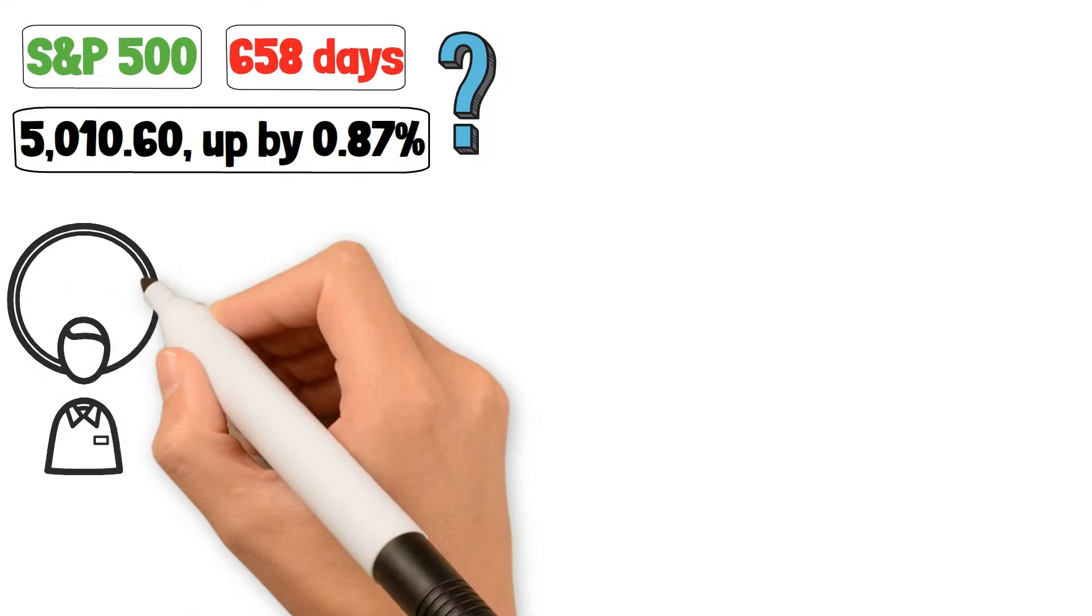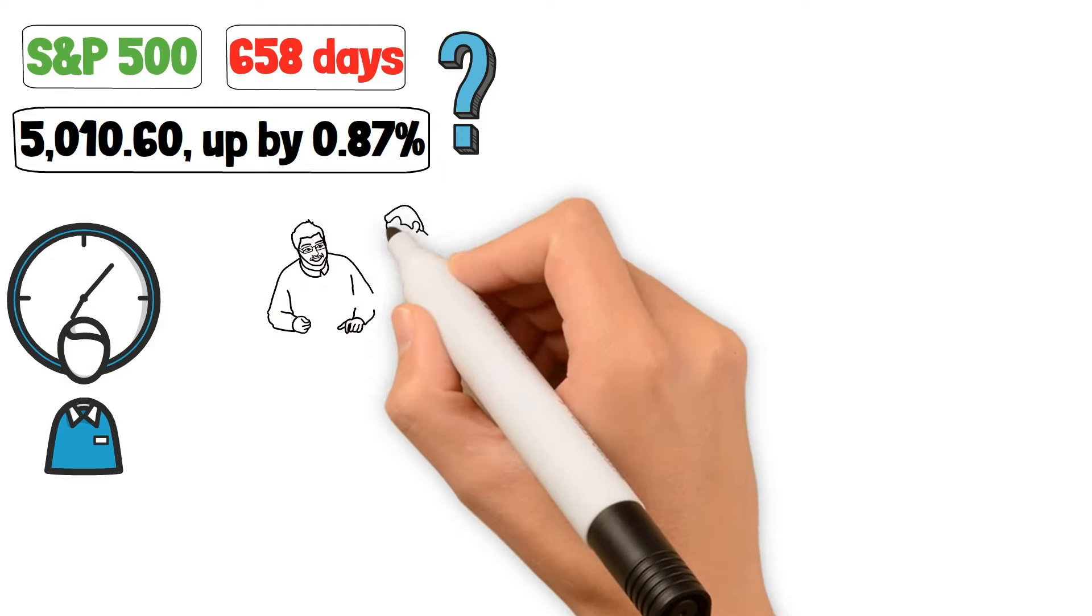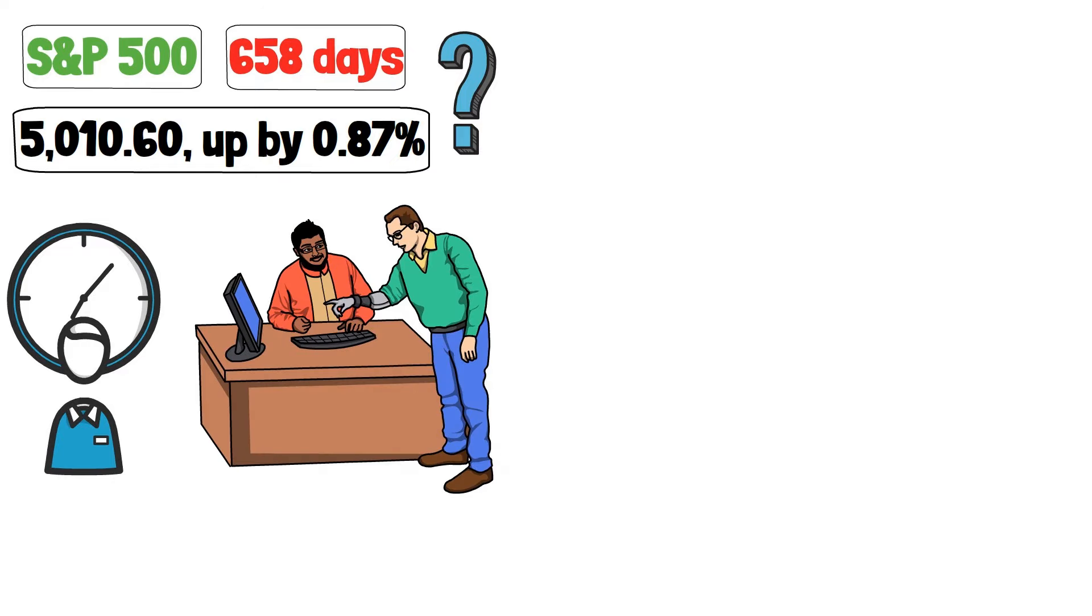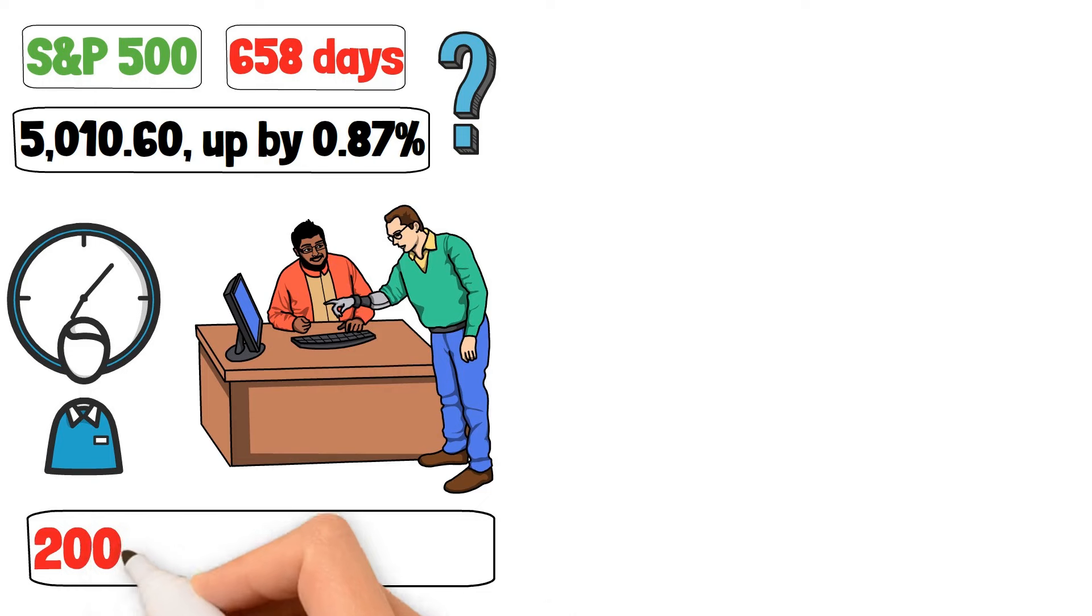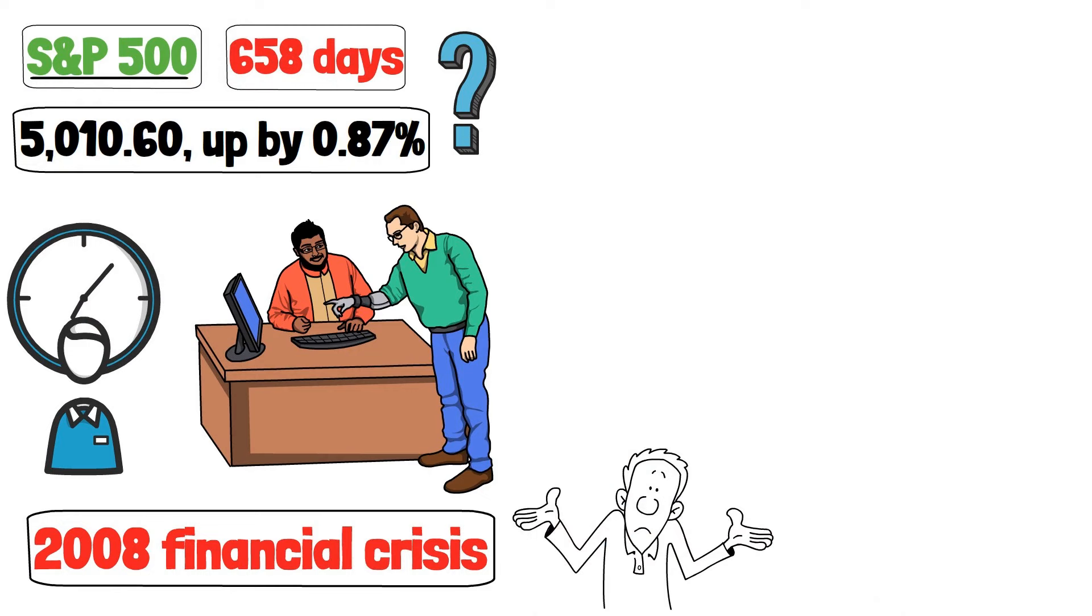Well, what does this mean for our beloved index? Well, the yield curve suggests that the rally might be on borrowed time. If history repeats itself, we could see a correction when the market aligns with the economic indicators. For instance, before the 2008 financial crisis, the yield curve inverted and we saw the S&P 500 eventually plummet. Fast forward to today and we're seeing a similar pattern. Caution is the word. Look at the divergence.